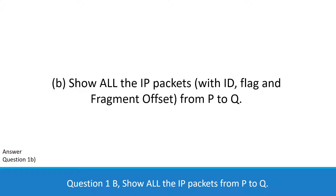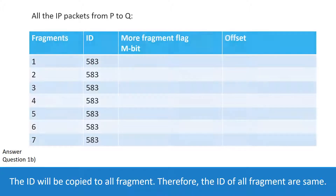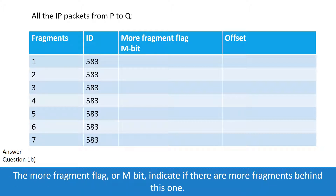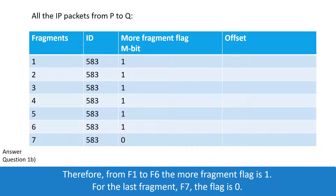Question 1b: Show all the IP packets from P to Q. The ID will be copied to all fragments, so the ID of all fragments is the same. The More Fragment flag, or MF bit, indicates if there are more fragments behind this one. Therefore, from F1 to F6, the More Fragment flag is 1. For the last fragment, F7, the flag is 0.